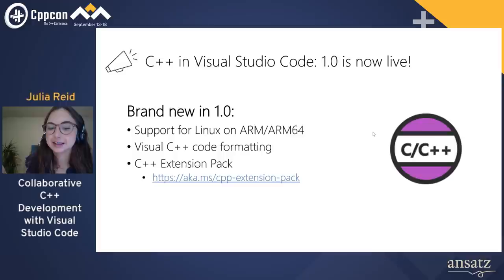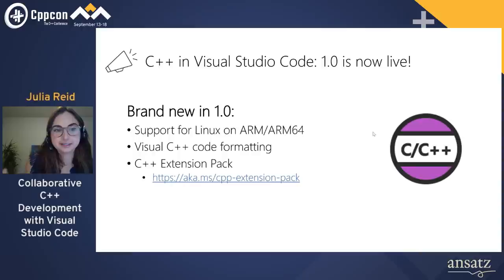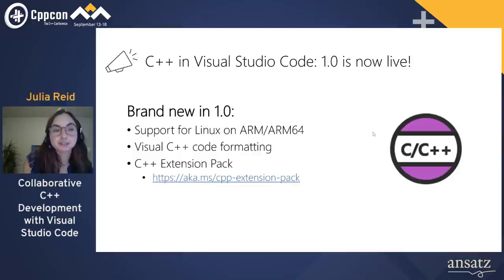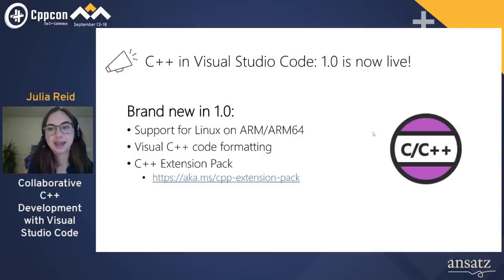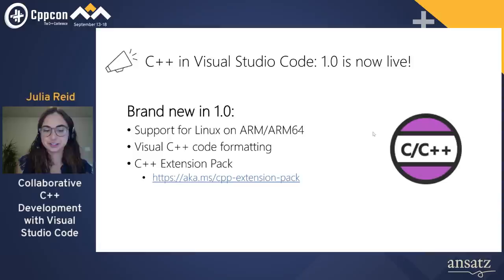New features in 1.0 include: support for Linux on ARM and ARM64, giving a first-class development experience with editing, IntelliSense, and remote build and debug — so you can develop C++ applications for Raspberry Pi from VS Code. Another new feature is Visual C++ code formatting, meaning all the C++ code formatting features available in Visual Studio are now supported in VS Code. VS Code also has built-in EditorConfig support for all these new settings, allowing shared formatting config between VS and VS Code. The third new thing is the C++ extension pack — check it out via the aka.ms link.